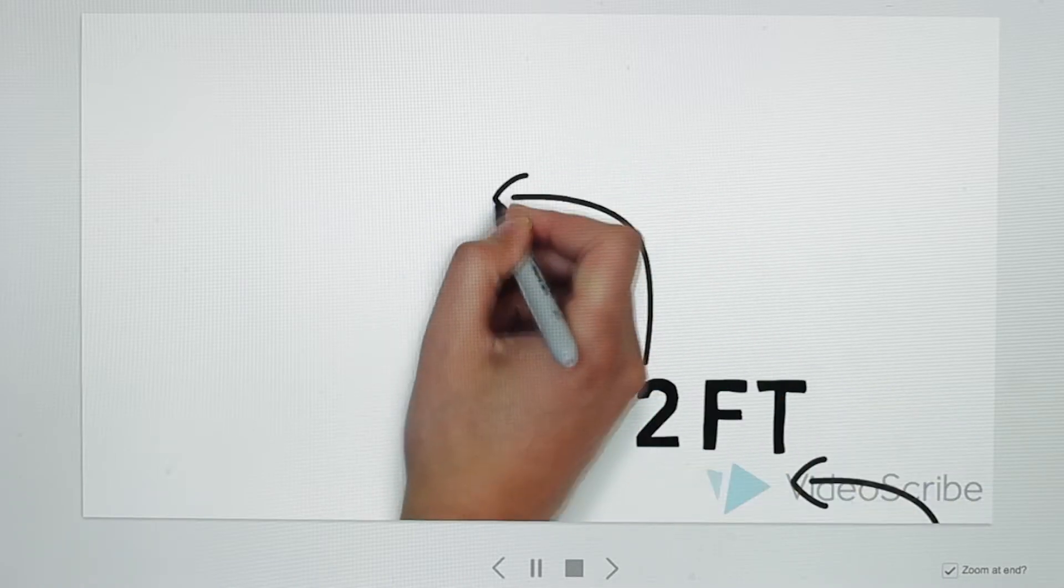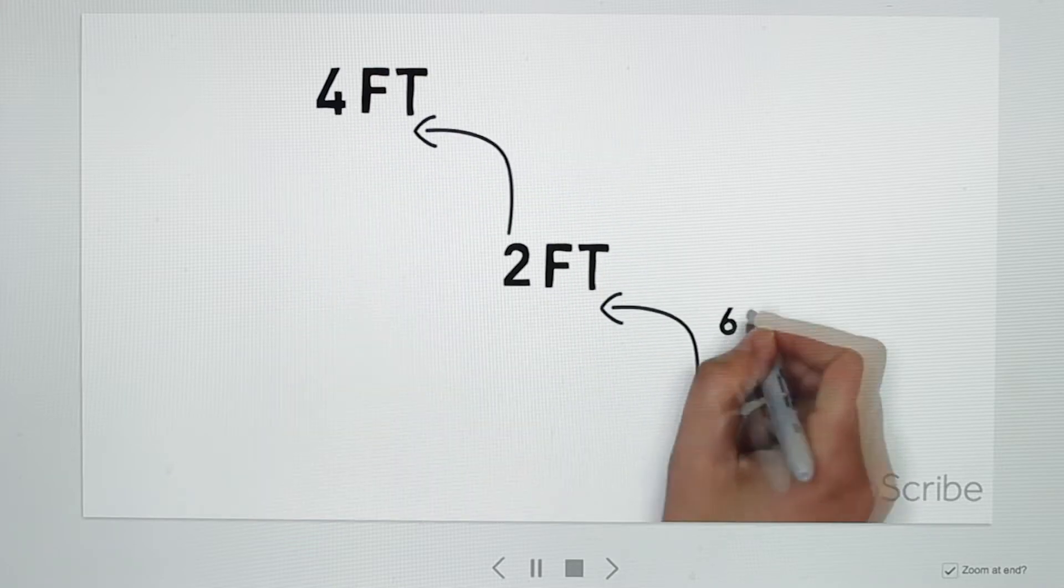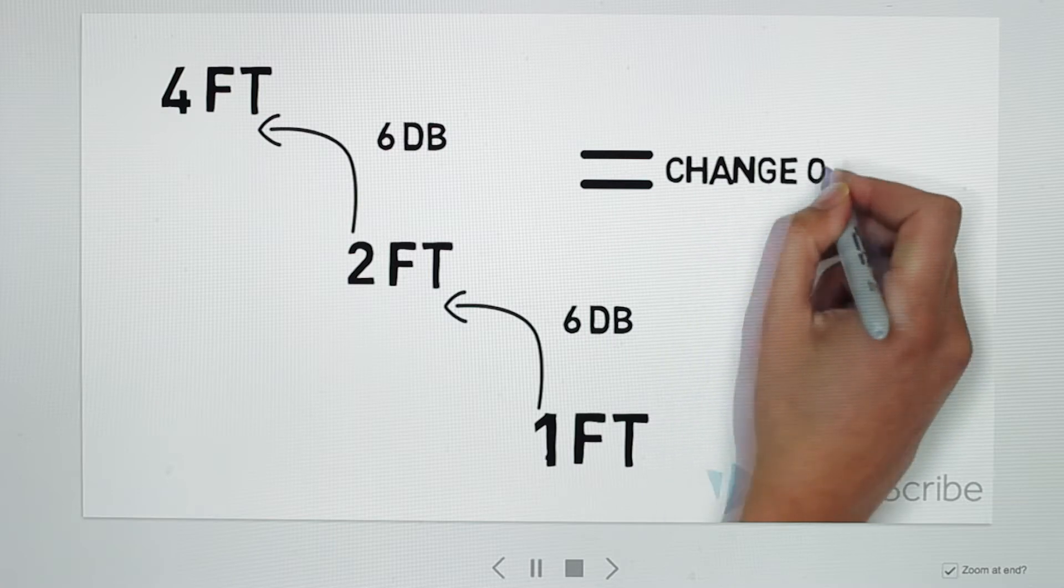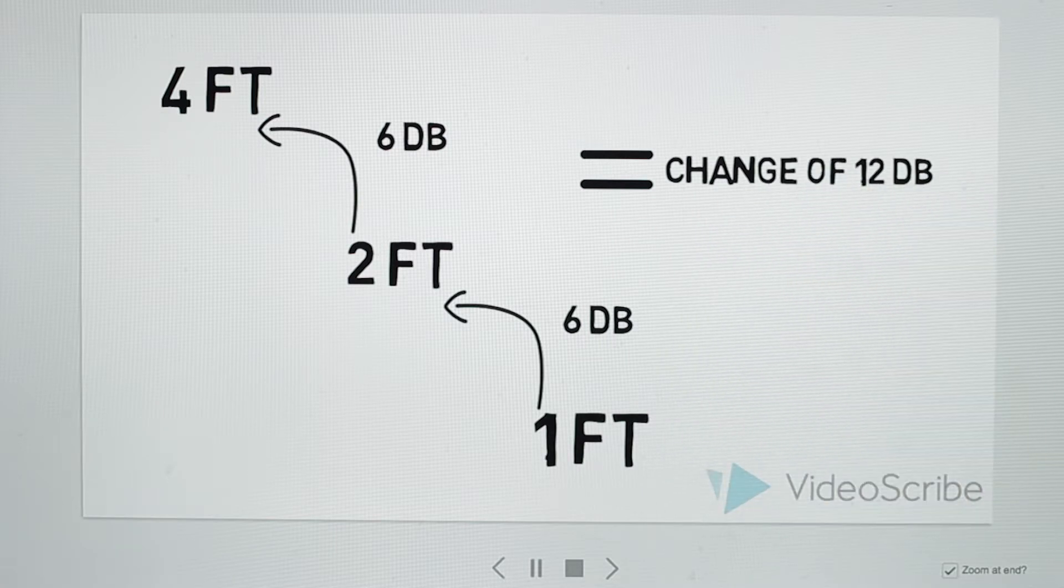The close-up shot had the mic one foot away. To double the distance would be two feet, and to do it again would be four feet, just like our wide shot. With a change of six decibels for every time we double the distance, there is a net change of 12 decibels between the two shots.